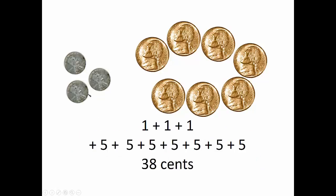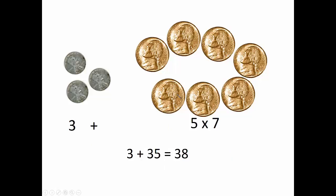We could add the amount that each coin is worth and find out she has 38 cents, or we could use multiplication, that shortcut for adding the same thing again and again. Three plus five times seven, 38 cents.